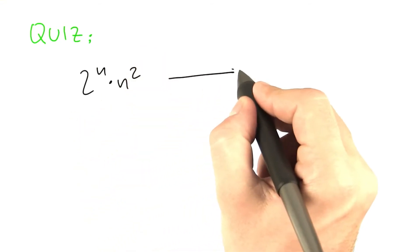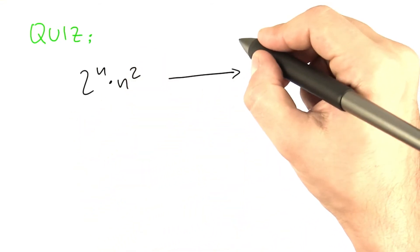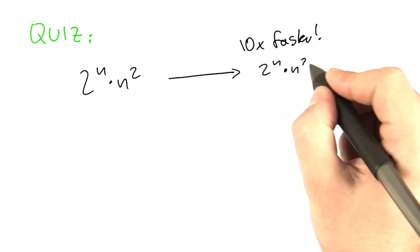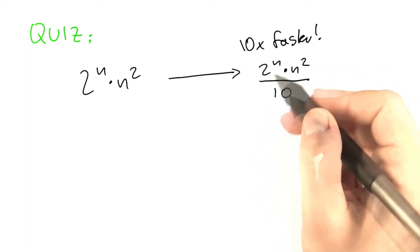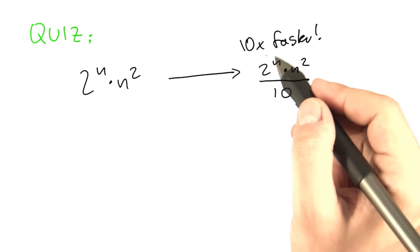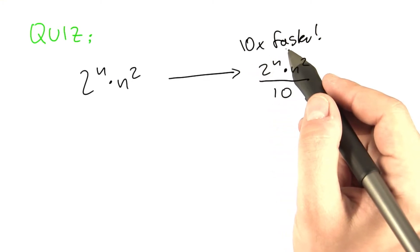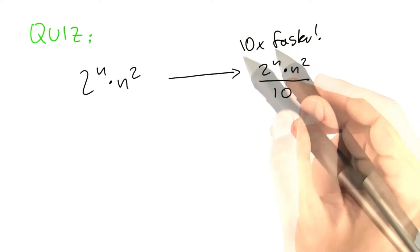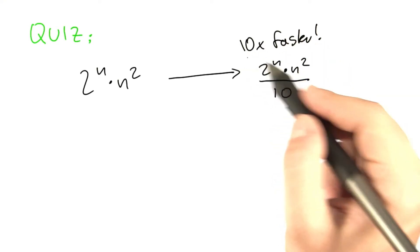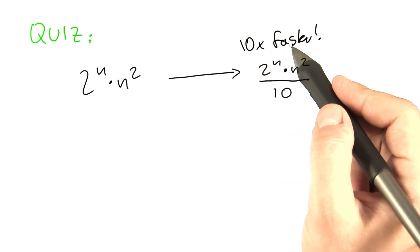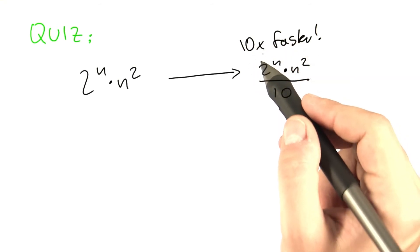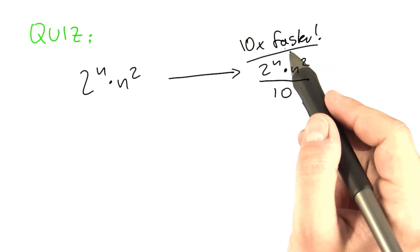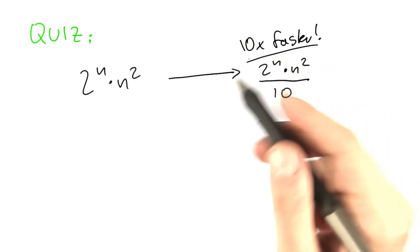Now we're going to look at an algorithm that is 10 times faster, so it has a running time of 2 to the power of n times n squared over 10. Finding an algorithm that is 10 times faster is actually huge in practice. Imagine, for example, that whenever you start your computer, it would start 10 times faster than it does now — a huge improvement. But what I want to show you is that such a huge improvement is virtually useless when you're dealing with exponential time.